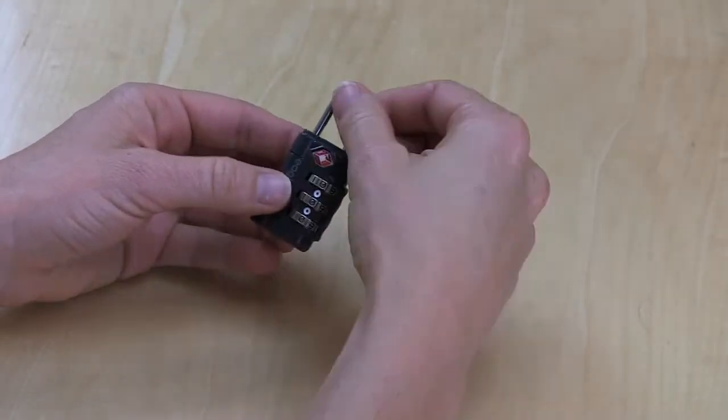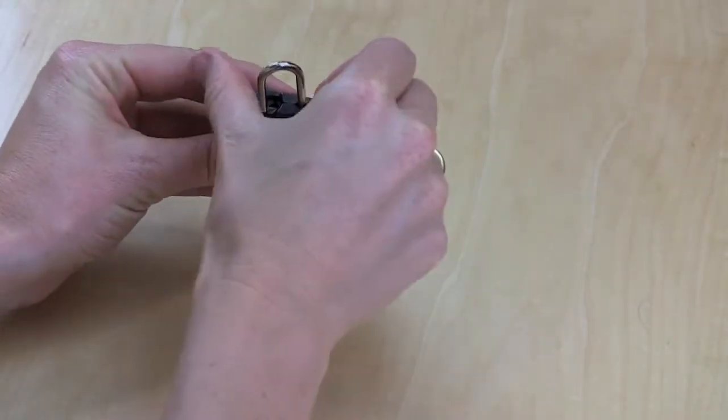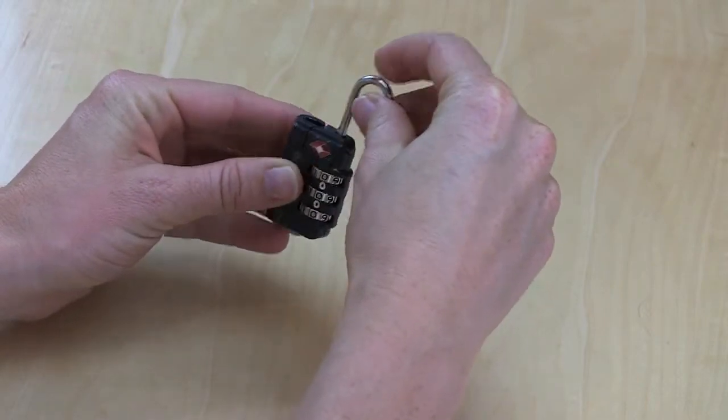To set the combination on your lock, pull up the shackle and rotate it 180 degrees counterclockwise.